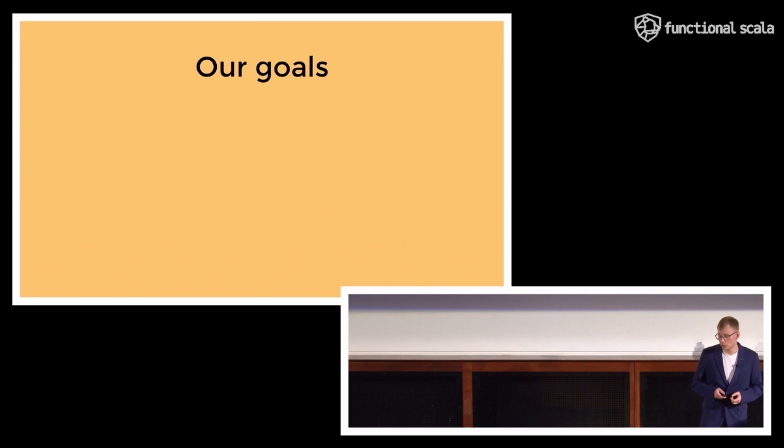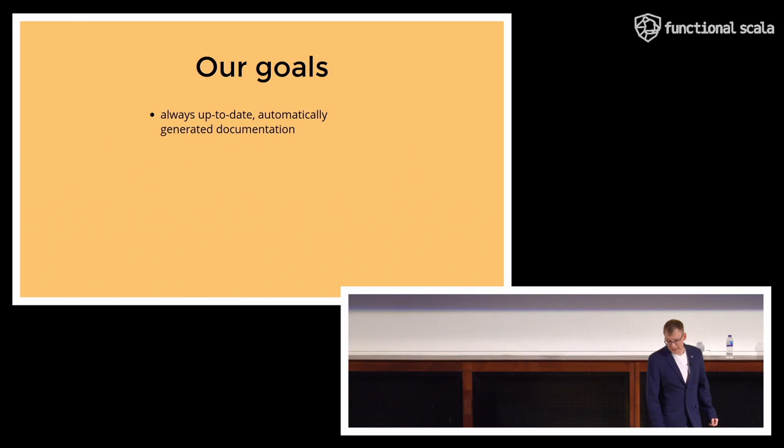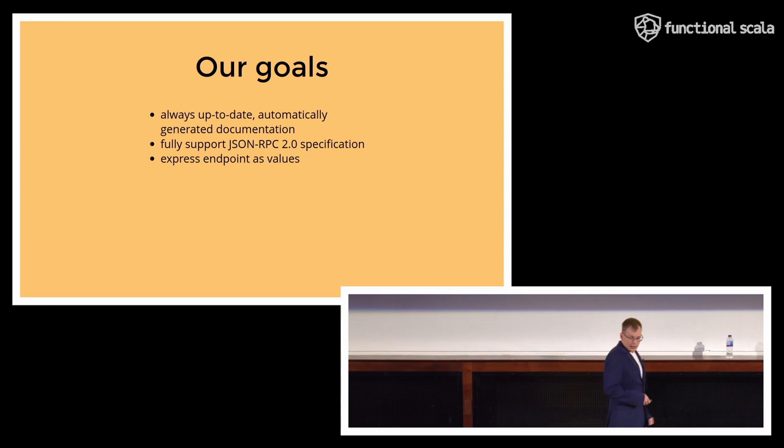So now, equipped with the understanding of JSON-RPC protocol, we can proceed further and flesh out our goals. So, first of all, as we have already established, we want to have always up-to-date, automatically generated documentation. We also want to fully support JSON-RPC 2.0 specification with all those batch requests, notifications, and whatnot. We would like to express our endpoints as regular values, because we think that that's idiomatic to functional Scala. And we also like this approach that Tapir took, for example.